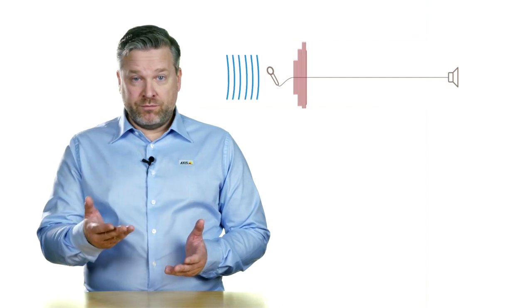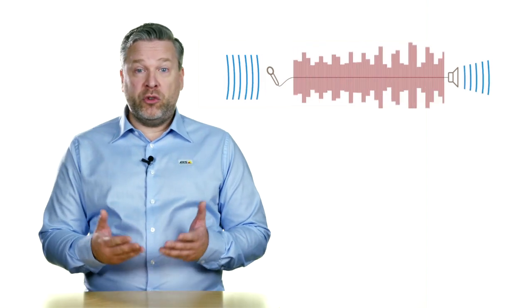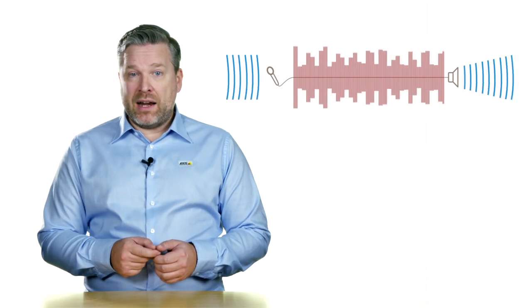Analog audio converts sound waves into electrical voltage. This electric signal can then be transported, stored and eventually converted back into sound waves. As with all electric signals, it will contain a small amount of noise.